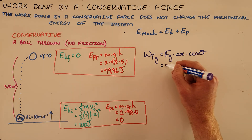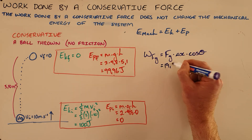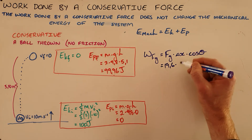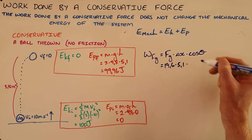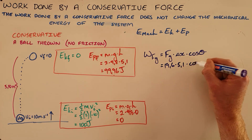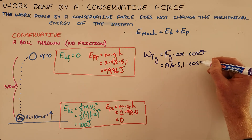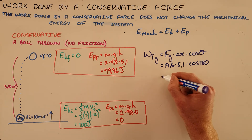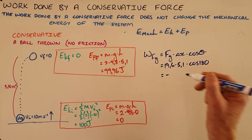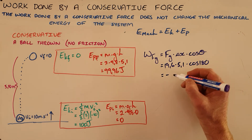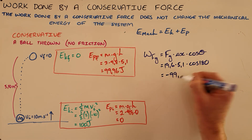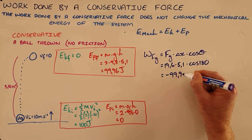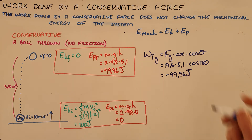The force of gravity is 19.6 newtons, the displacement is 5.1 meters, and since these are in opposite directions, the force of gravity does a negative amount of work — negative 99.96 joules.